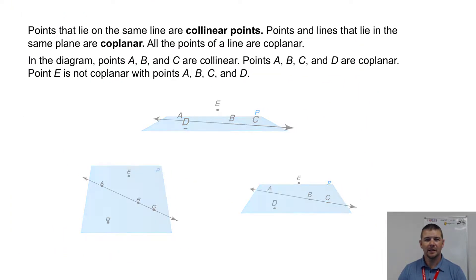Points that lie on the same line are collinear points. Points and lines that lie in the same plane are coplanar. All the points of a line are coplanar.